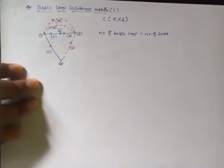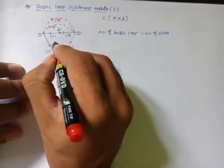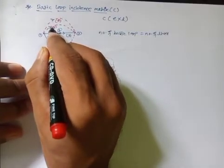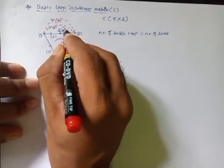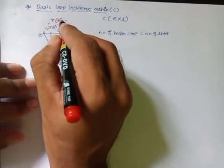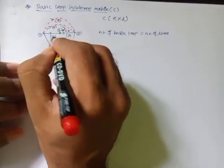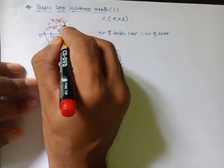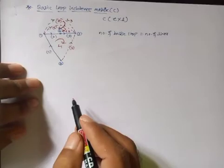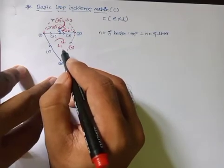Taking one link at a time: link number 4 forms loop L1, link number 5 forms loop L2, and link number 6 forms loop L3, which consists of elements 6, 2, and 3. So there are 3 basic loops corresponding to the 3 links, compared to the basic cut set matrix where the number of cut sets depends on the number of tree branches.